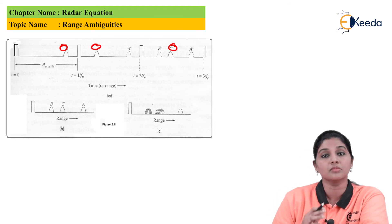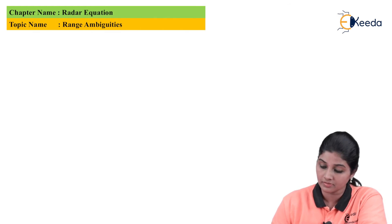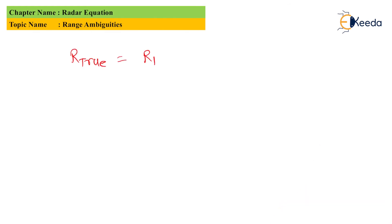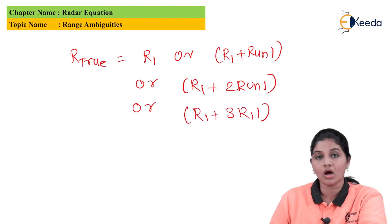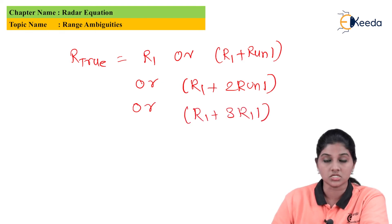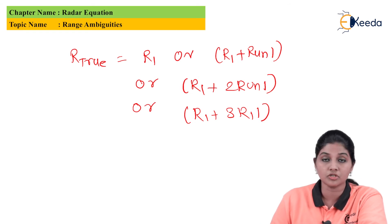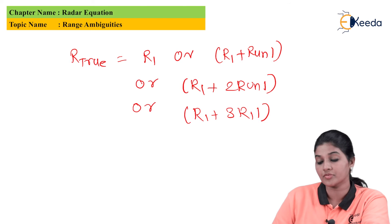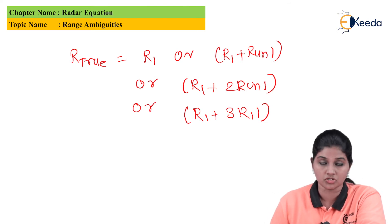If we consider the PRF corresponding to F1, then we can write the true range as: R_true = R1, or R1 + Run1, or R1 + 2*Run1, or R1 + 3*Run1. These values basically provide the true value of the range.